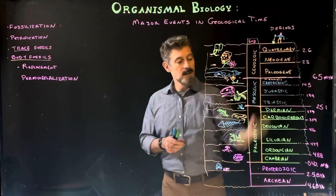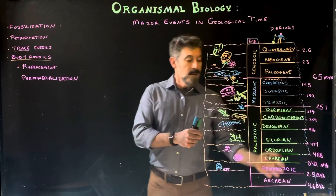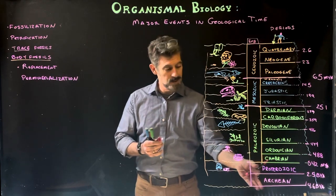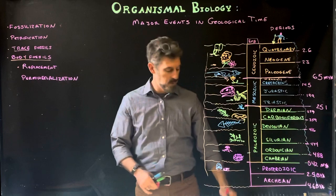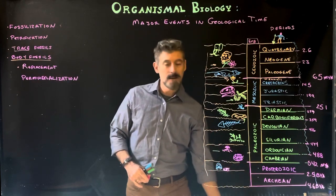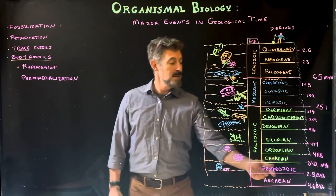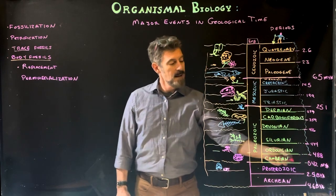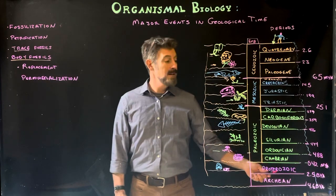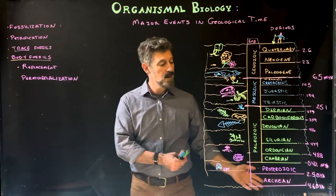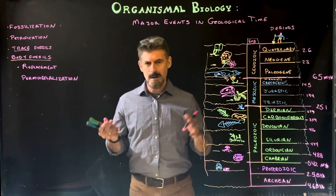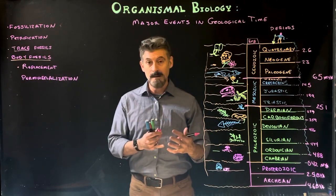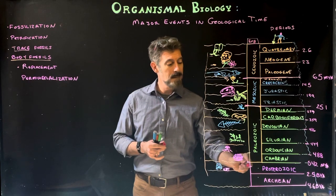Before the main era content, note this is not to scale. If it were, we'd have to go way below the floor to scale the Archaean and Proterozoic properly. We're starting around 542 million years ago going to today, but from that point back we go to 4.6 billion years—skipping a lot, including the first prokaryotic cells, eukaryotic cells, and the origins of multicellularity.